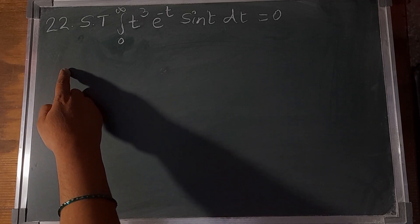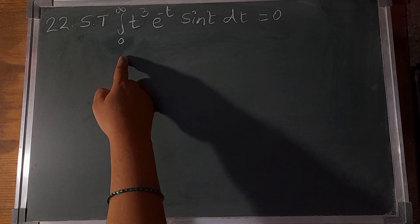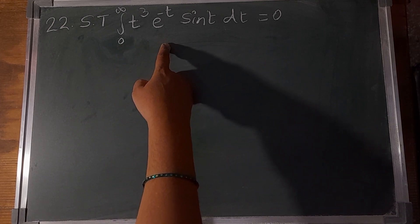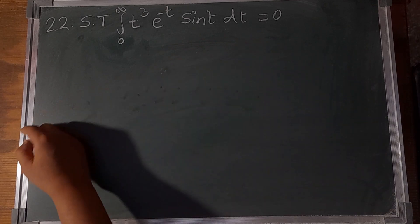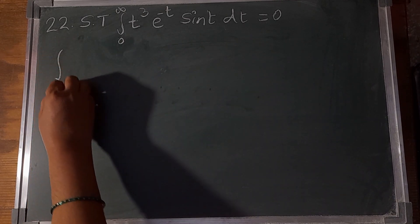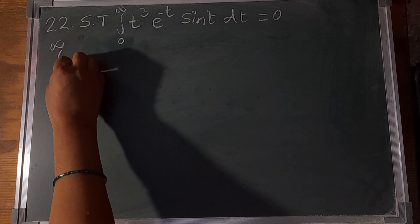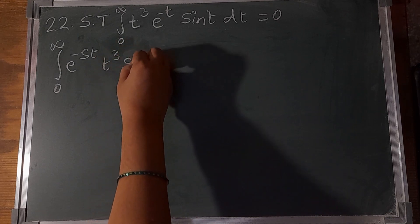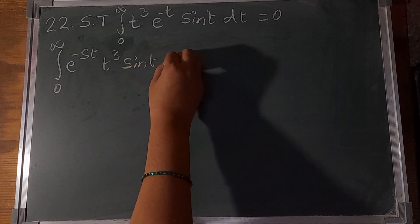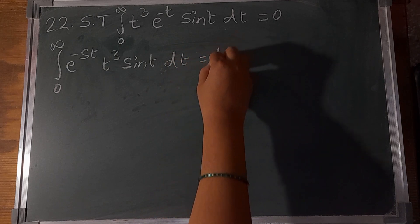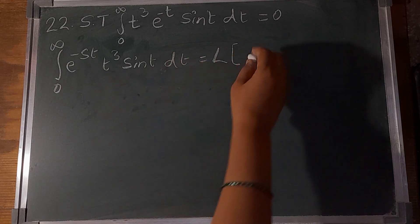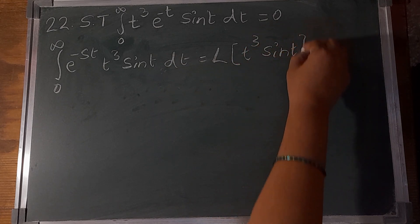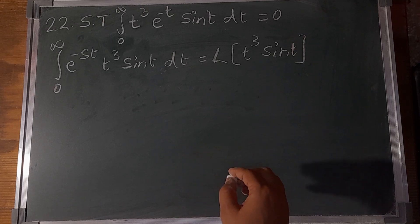Problem number 22 shows that the integral of 0 to infinity of t³ e^(-t) sin(t) dt equals 0. The integral of 0 to infinity e^(-t) t³ sin(t) dt is nothing but the Laplace transform of t³ sin(t), from the definition of the Laplace transform of f(t).